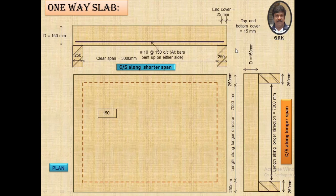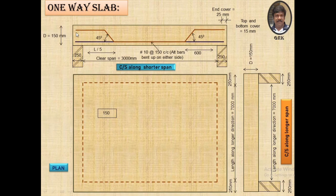I will show you the reinforcement details as placed in a one-way slab. There are many ways of showing the reinforcement in the slab; this is one type we have considered, and in the next video we will show you the other type. In this case, I have taken one bar straight with alternative bars bent up on either side. The next bar has been bent up at both ends at an angle of 45 degrees.